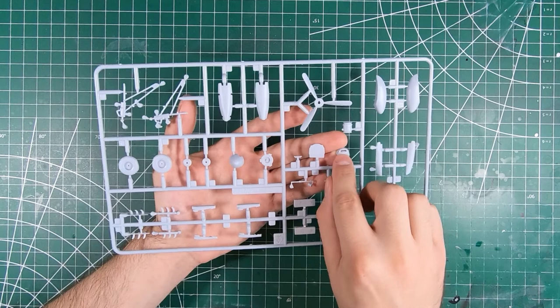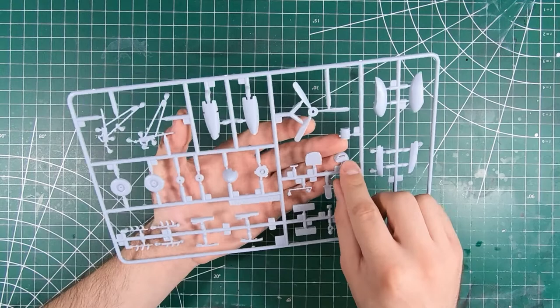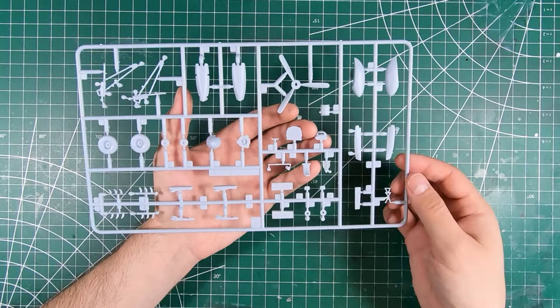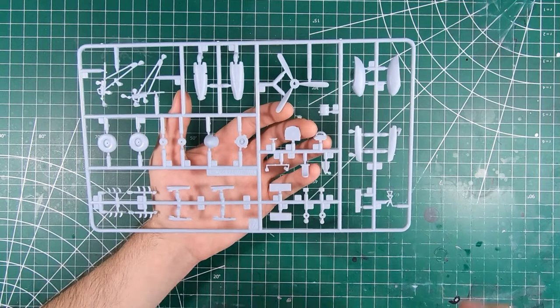We've got our little chin scoop there, the other characteristic to these Mosquitoes. That's fortunately molded open so hopefully that's a nice fit to the nacelle. A few of our little bits and bobs. We've got our face for our radiator, a little bit of a grill molded in there. Some landing gear components.